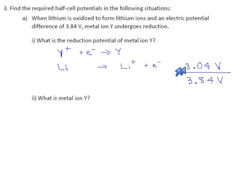Now that we have that, can you tell what the voltage must have been? Something plus 3.04 makes 3.84. 3.84 take away the 3.04 that came from the lithium gives us 0.80 volts. This metal, metal Y, whatever it is, must have a voltage of 0.80 volts.